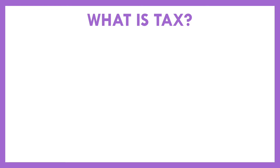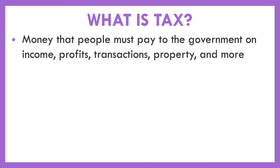The government has to raise money to cover its budget — it has to bring in revenue. The main way it does that is through taxation. Tax is simply money that people have to pay to the government on a wide range of things: income, profits, transactions like a sales tax, property tax, and much more.